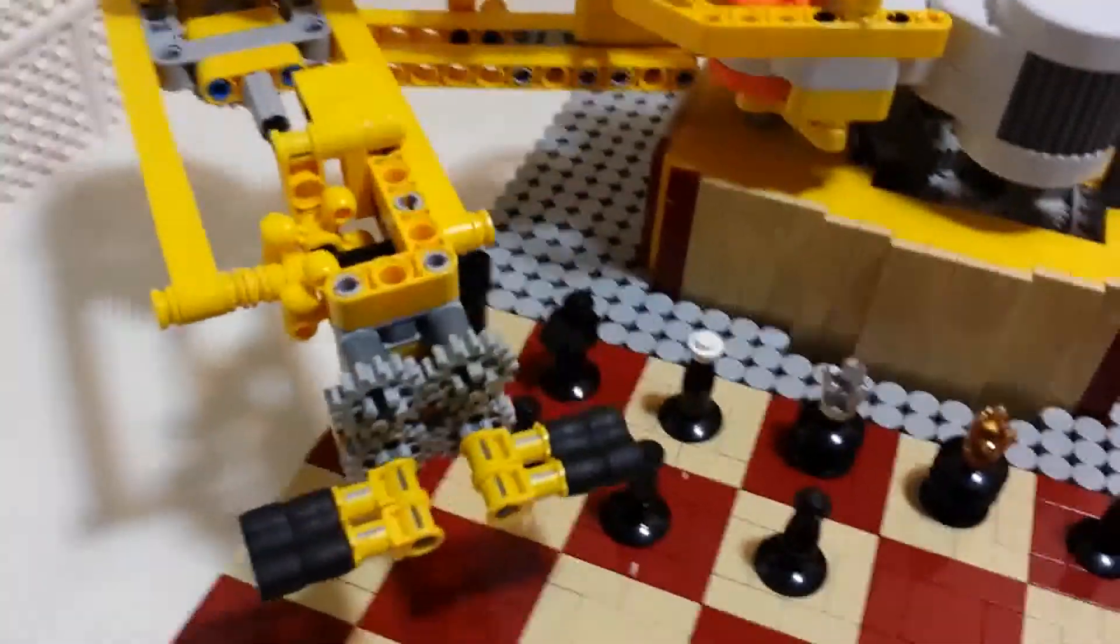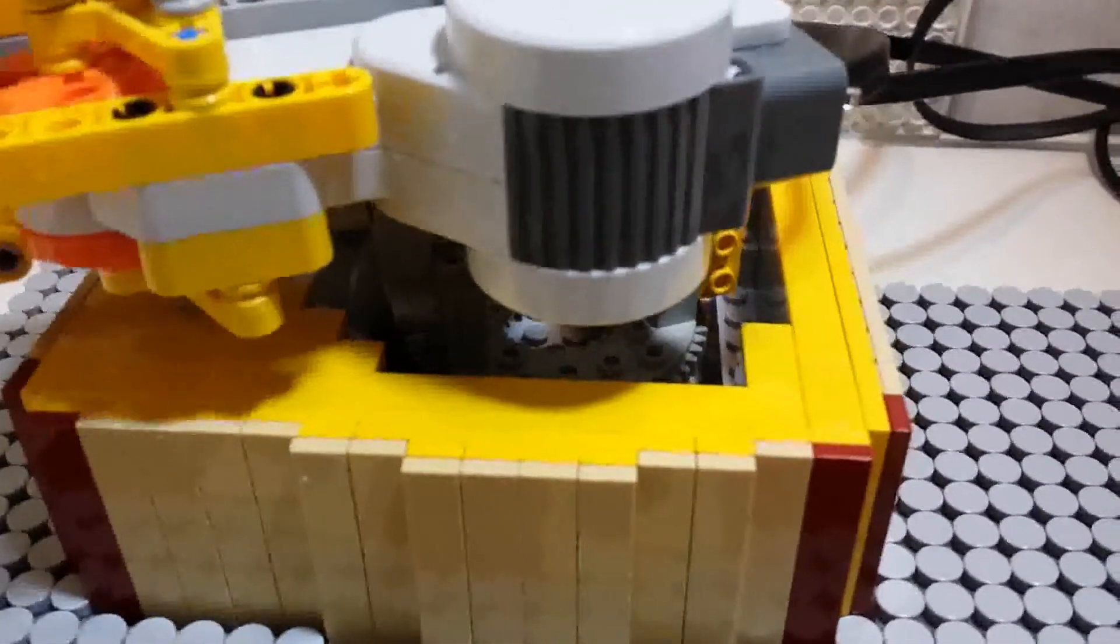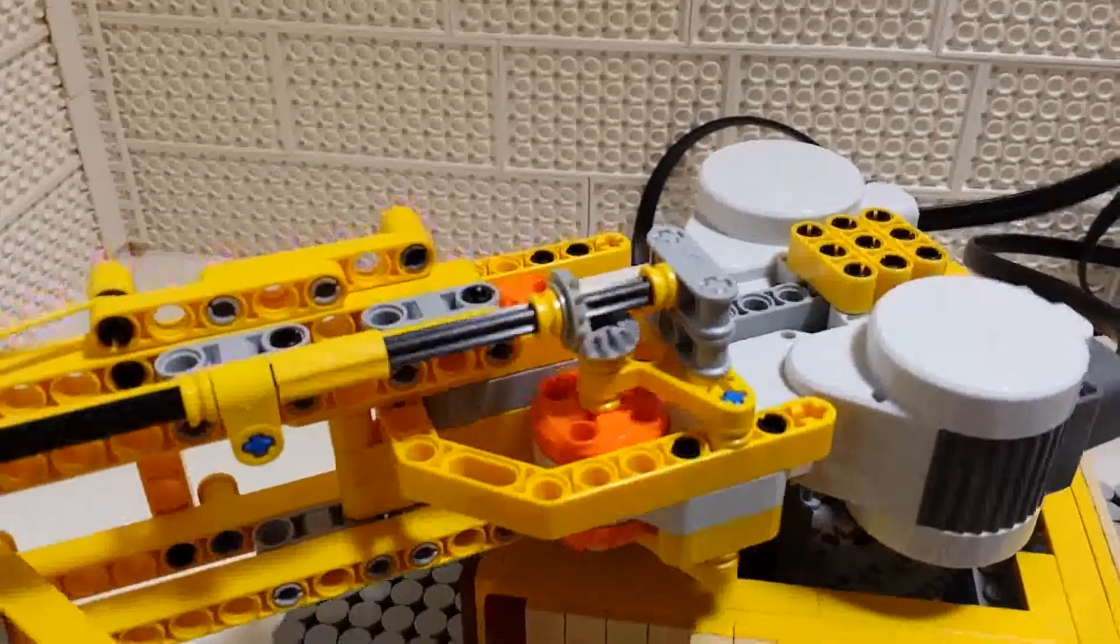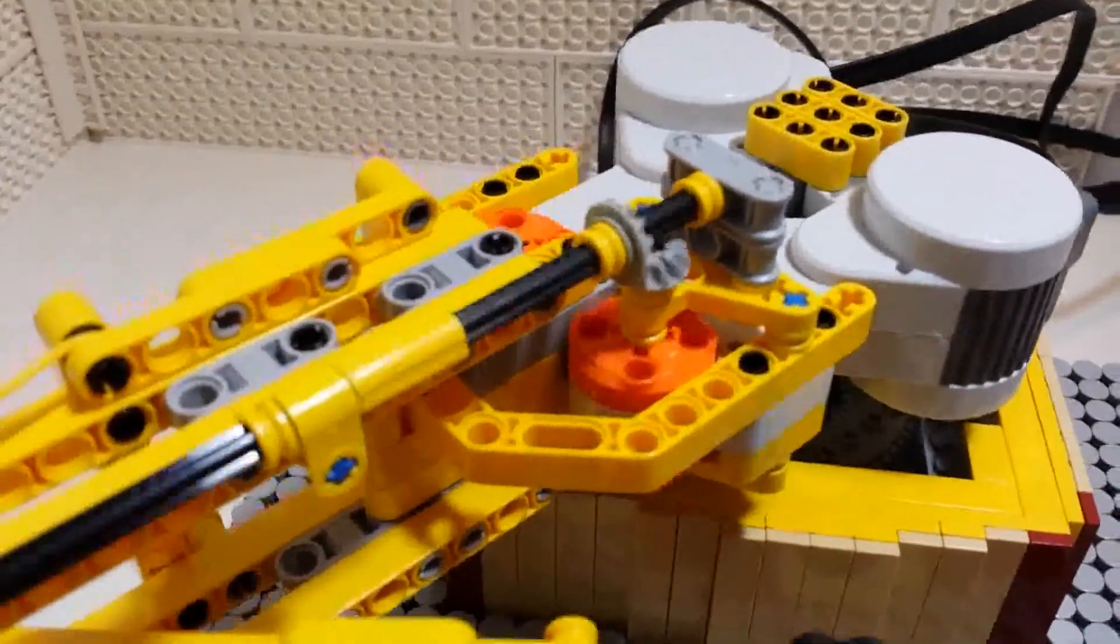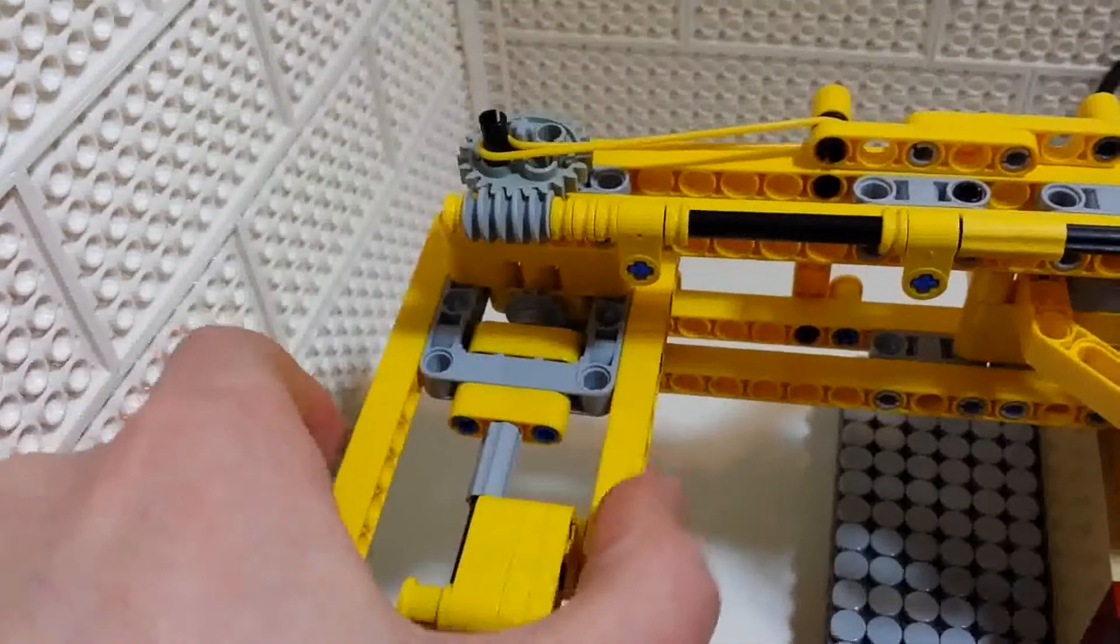This brings us to the mechanics. Nona has a total of three NXT motors. There is one hidden inside her body rotating the upper arm. Of the two motors that you can see, one rotates the lower arm. Rotating the upper and lower arm together allows Nona to reach every square on the board.